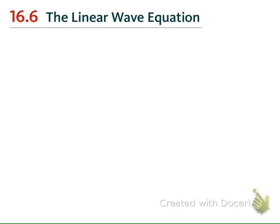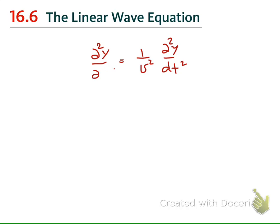I will give you the final form of the linear wave equation with our proof. The linear wave equation is given as d²y/dt² is equal to (1/v²) d²y/dx². This is the wave equation, where v is the speed of the wave.